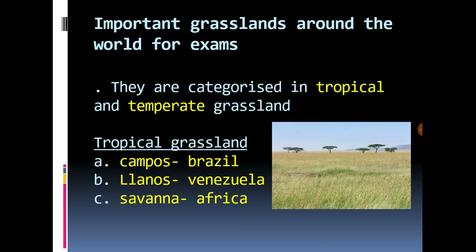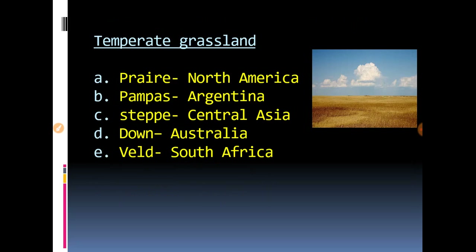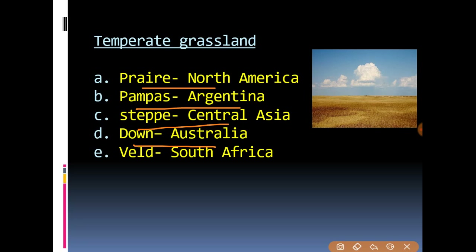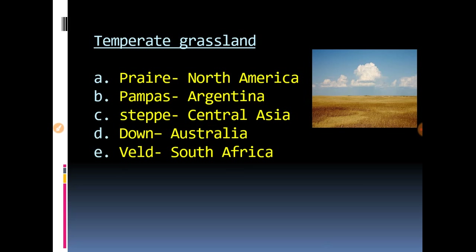Now for the important temperate grasslands: Prairie is found in North America, Pampas is found in Argentina, Steppe is found in Central Asia, Downs is found in Australia, and Veld is found in South Africa.